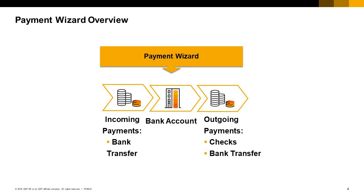There is also an option for issuing a payment order run that creates a bank file, does not create any journal entry, and leaves the invoices open. The invoices will be closed after getting the bank confirmation. This feature is supported by two reports: Payment Orders Report by Business Partner, and Payment Orders Report by Payment Run.